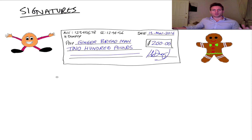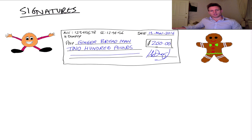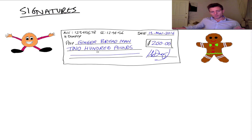So what's a signature? We're very used to the concept of signatures in real life. For example, if Humpty Dumpty — remember him from the first video — wants to pay the Gingerbread Man 200 pounds for services rendered, he'll write a check and present it. The Gingerbread Man will go and cash it at the bank. Until Humpty has signed the check, the Gingerbread Man can't cash it. The thing about checks is that if the Gingerbread Man tried to cross out 200 and replace it with 500 pounds, the bank would not accept the check.